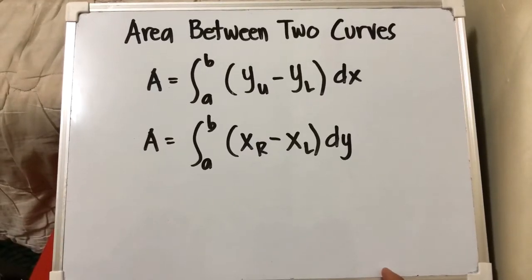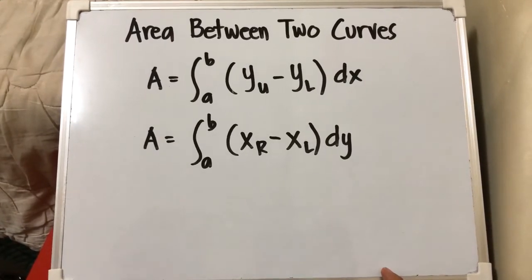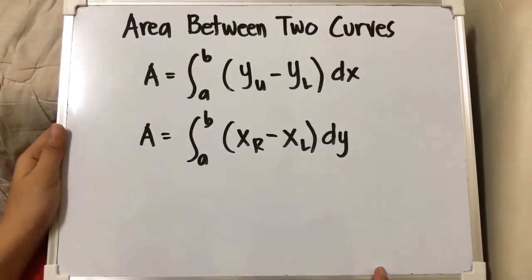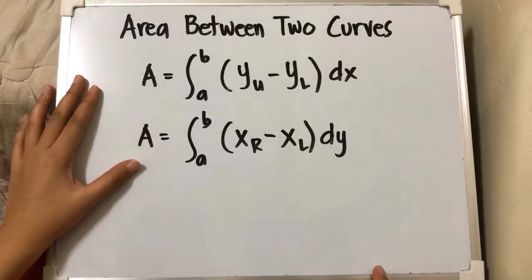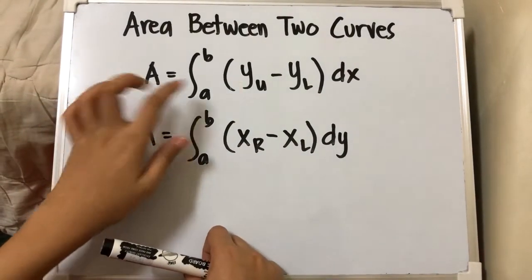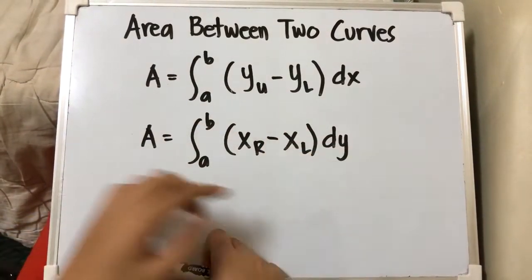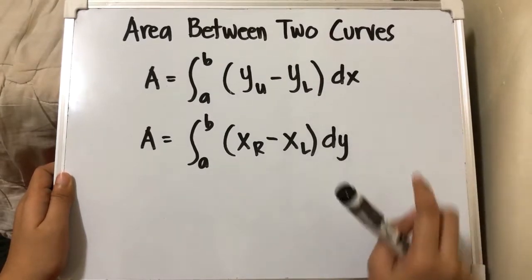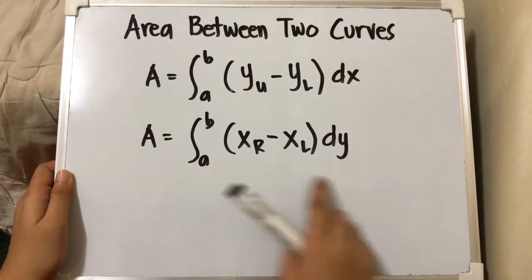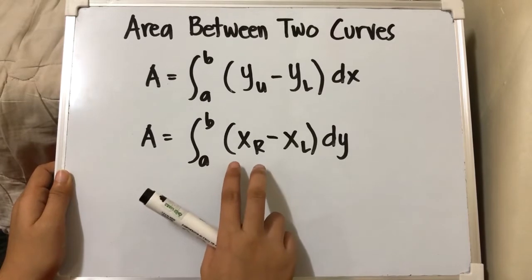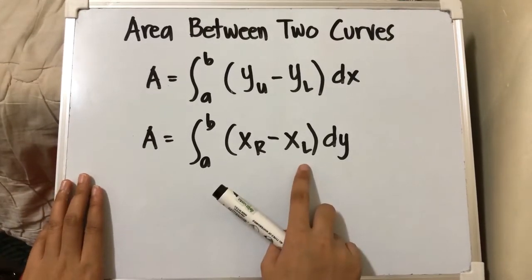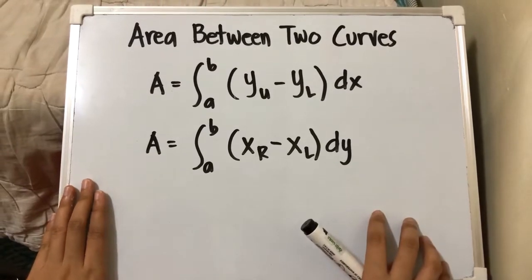In this video we will be discussing area between two curves. I already created a separate video discussing area under a curve, so this video is related to that. For two curves, to get the area we use the integral of y_upper minus y_lower in terms of dx. In terms of dy, we have x_right minus x_left — the equation of the curve on the right minus the equation of the curve on the left.